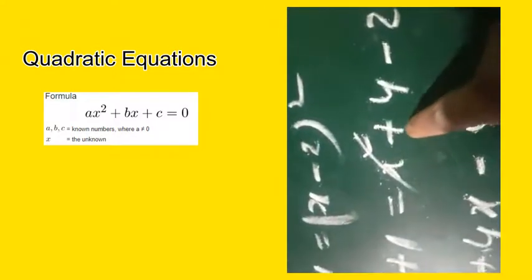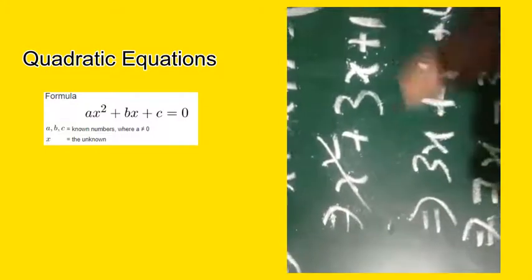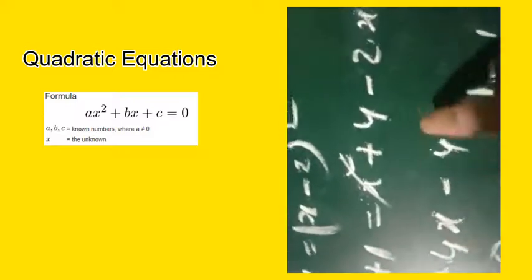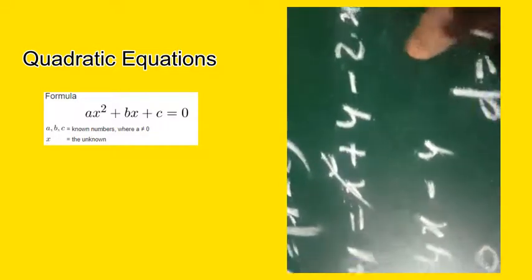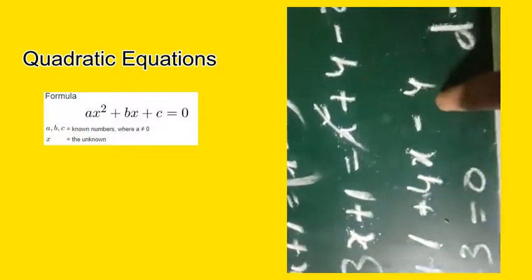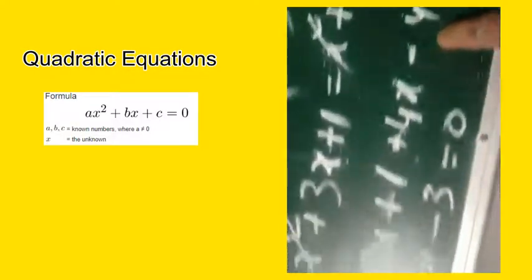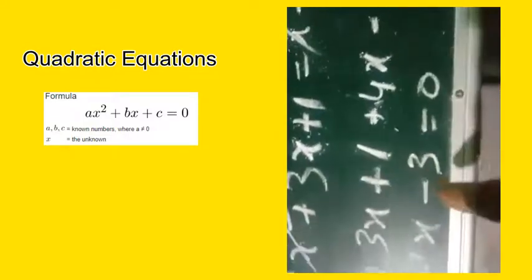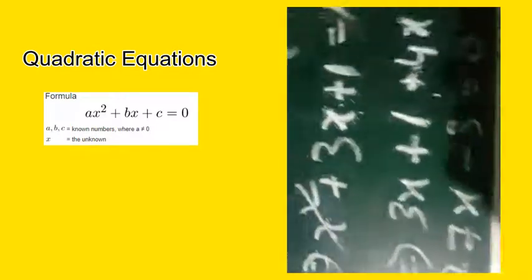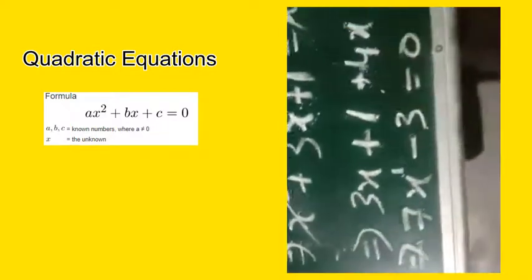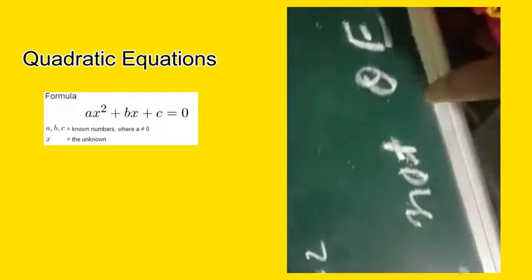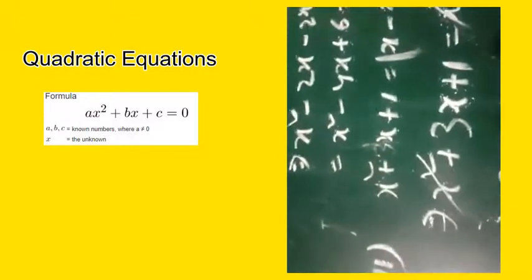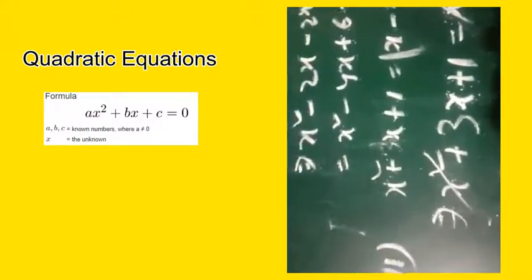Now x squared appears on both sides, so both x squared terms cancel. That leaves 3x plus 1 on the left, and minus 4x plus 4 moves to the left side, giving 3x plus 4x equals 7x, and 1 minus 4 equals minus 3. So we get 7x minus 3 equals 0. The degree here is 1, so this is NOT a quadratic equation. The remaining practice questions you can try yourself.